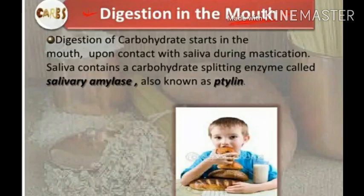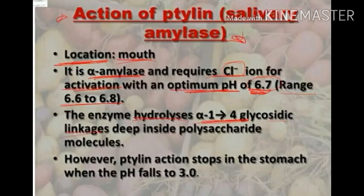So when we take a carbohydrate food, what happens in the mouth? Digestion of carbohydrates starts in the mouth. Upon contact with saliva during mastication, saliva contains carbohydrate-splitting enzymes called salivary amylase, which is also known as ptyalin. The salivary amylase requires chlorine ions for activation, with an optimum pH of 6.7. This enzyme hydrolyzes alpha-1,4 glycosidic linkages deep inside polysaccharide molecules.